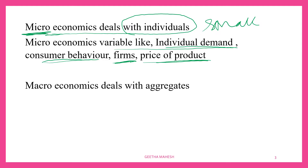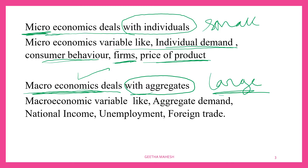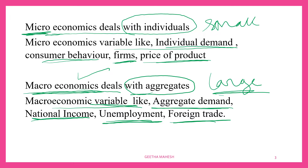What do you mean by macro? Macro means large, so macroeconomics deals with a large part of the economy. Macroeconomics deals with the aggregates. What are macroeconomic variables? Macroeconomic variables are aggregate demand, national income, unemployment, foreign trade, government budget — which we will discuss as economy as a whole. Because of that reason, we say that macroeconomics deals with the aggregates.